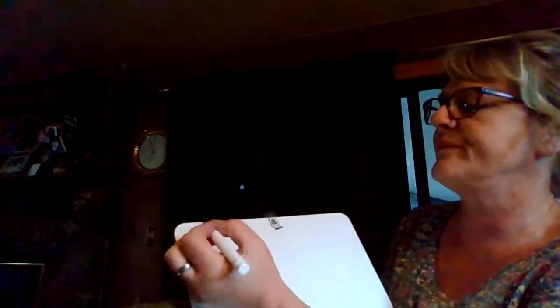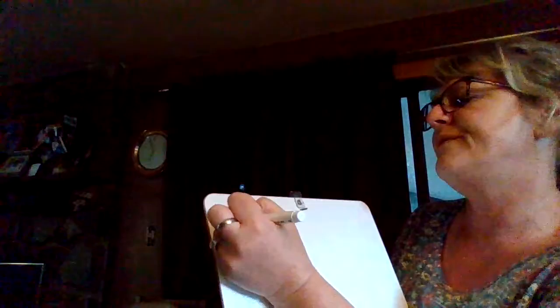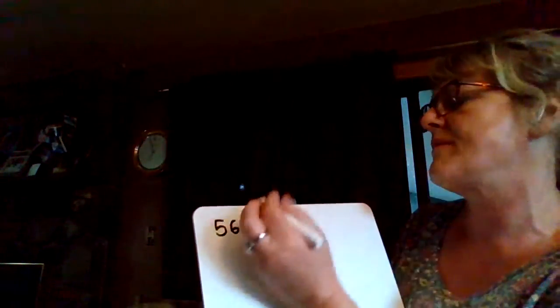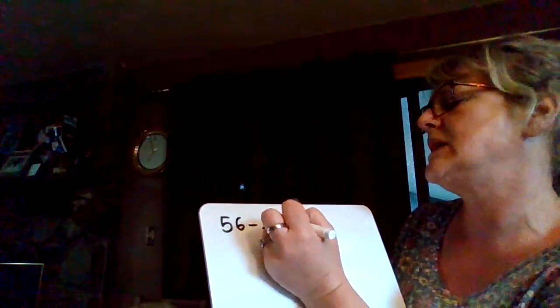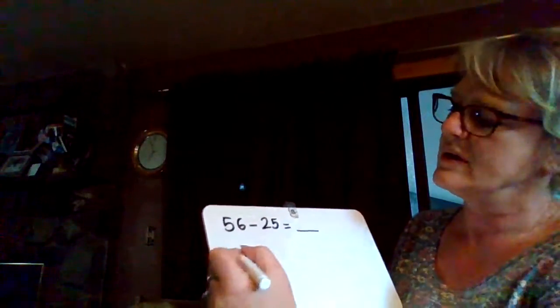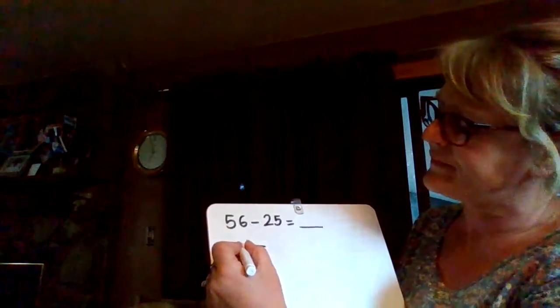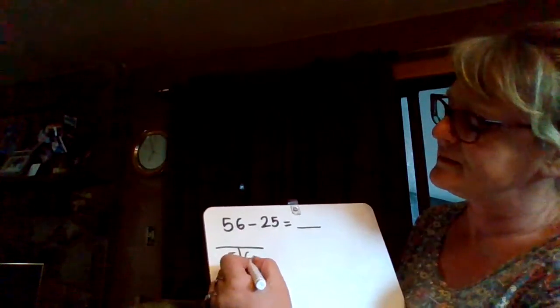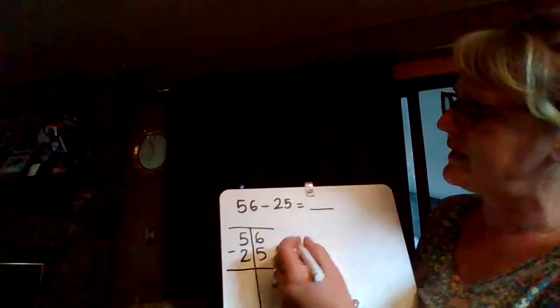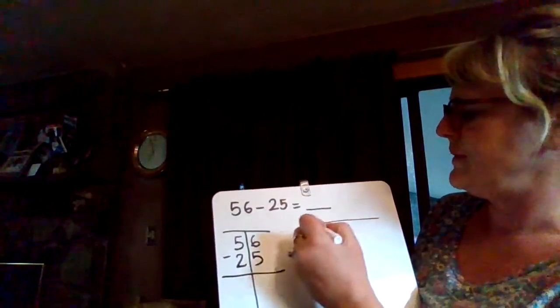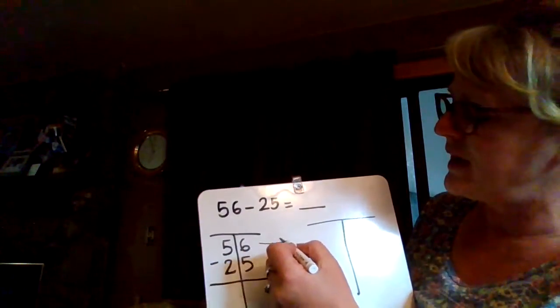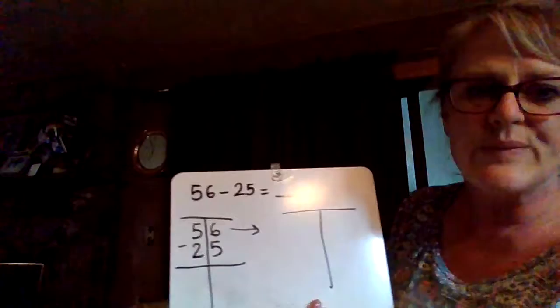Let's do another subtraction: 56 take away 25. Okay, tall T. Can you see it? When we use our place value strategy for subtraction, we draw 56 because we have 56.